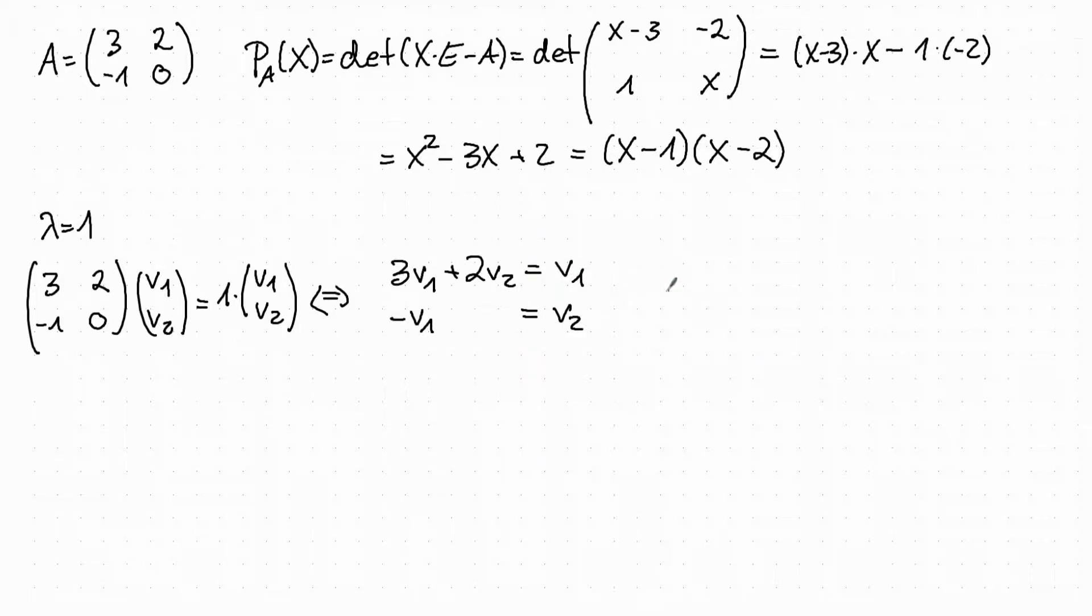We can find a solution, for example v₁, v₂ equals 1, minus 1, and all multiples of this are exactly the vectors that fulfill this condition. So our eigenvector is just the span of this vector.